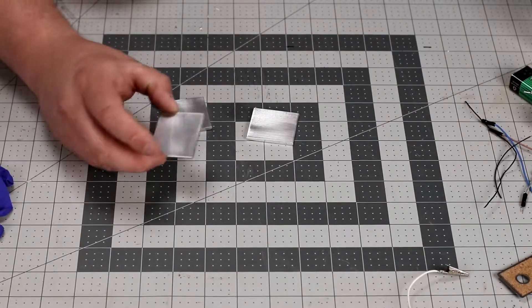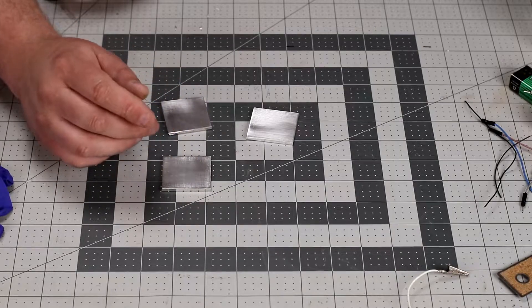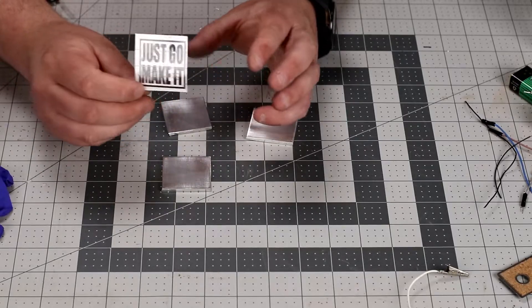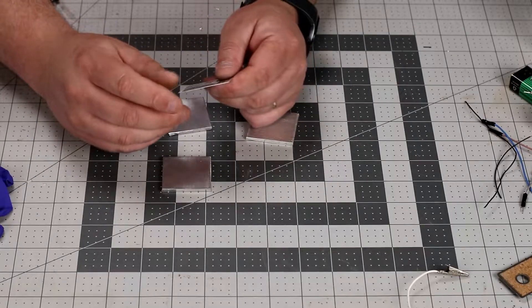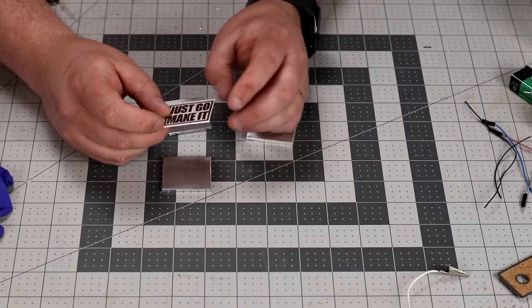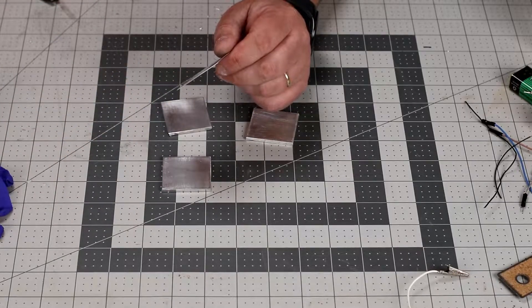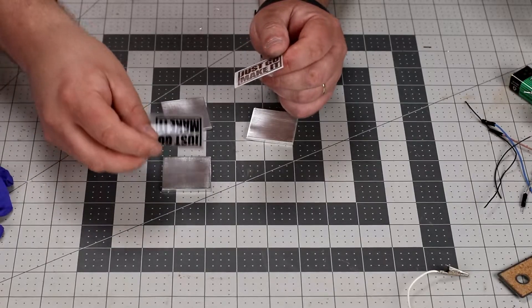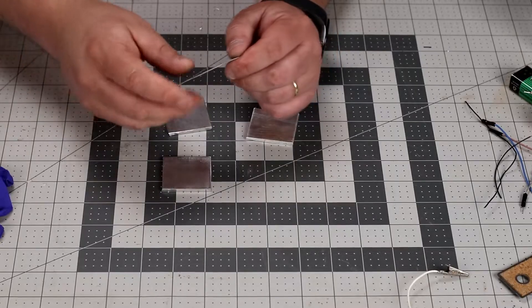Now what you use to mask off whatever it is you're wanting to etch they call that a resist and my wife just so happens to have one of them nifty little cricket vinyl cutters. I cut me out some regular vinyl here and also I have some of this iron-on vinyl and we'll see what happens if I iron it straight onto it and then etch it and see how that works.